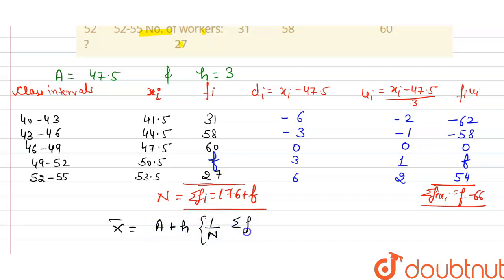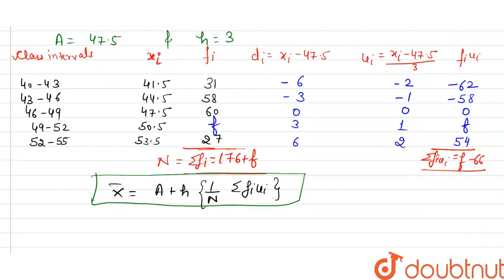Now substituting all these values in our formula, then we get x̄ is equal to 47.5 plus 3 times 1 divided upon 176 plus f,